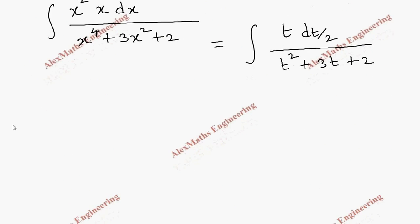Now from the numerator we can take 1 by 2 outside the integration. Then the remaining is t dt. And this term we can factorize as t plus 1 into t plus 2.